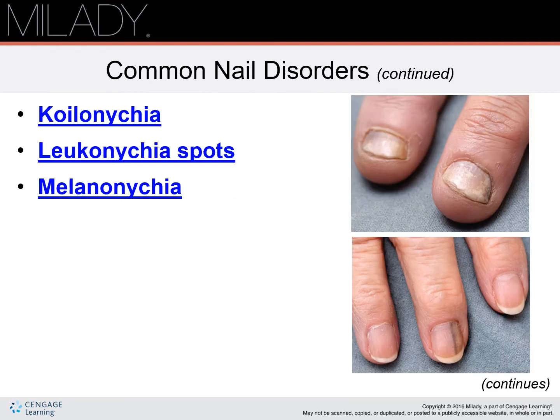Koilonychia is soft spoon nails with a concave shape that appears scooped out. The depression is usually large enough to hold a drop of liquid. Often spoon nails are a sign of iron deficiency, anemia, or a liver condition known as hemochromatosis, in which your body absorbs too much iron from the food you eat. Spoon nails can also be associated with heart disease, hypothyroidism, or other long-term illnesses.